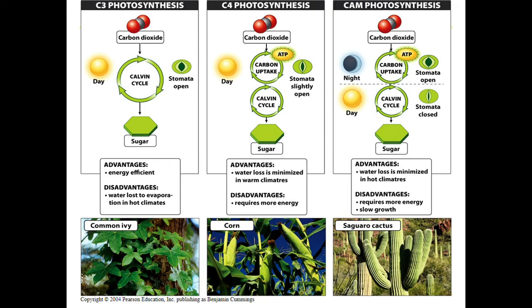CAM plants — like different cacti — live in dry climates and don't want to lose water; they're most efficient at water use. All plants have stomata, which are little holes on leaf cells that open to take in carbon dioxide. In dry environments, plants evolved so that during the day the stomata are closed to prevent water loss, but open at night to take in the CO2 needed for photosynthesis.